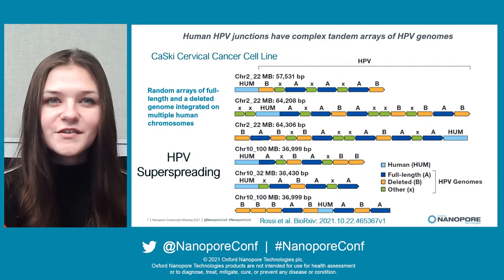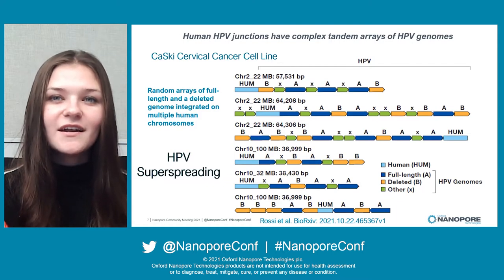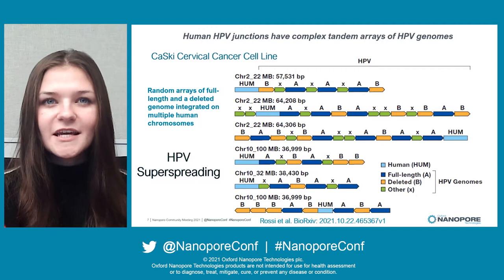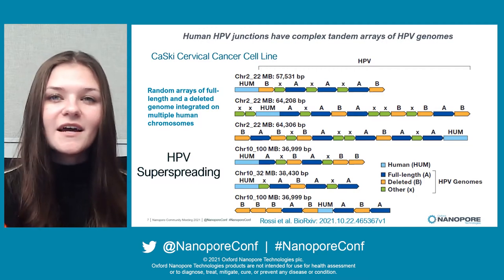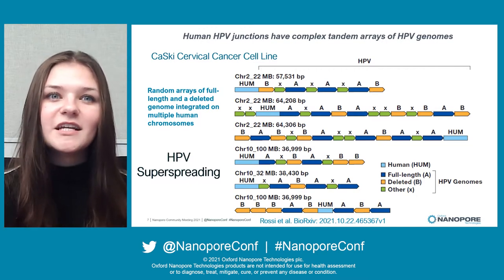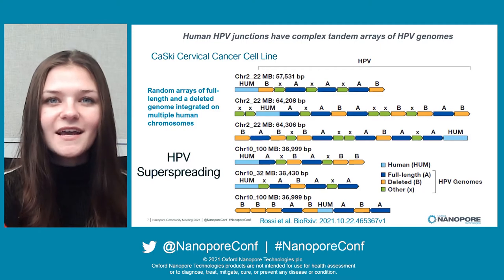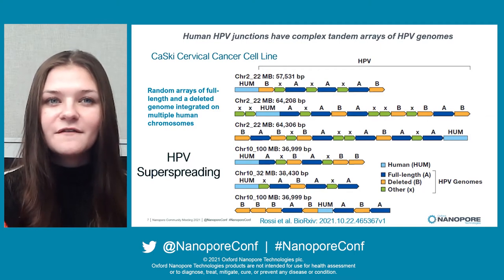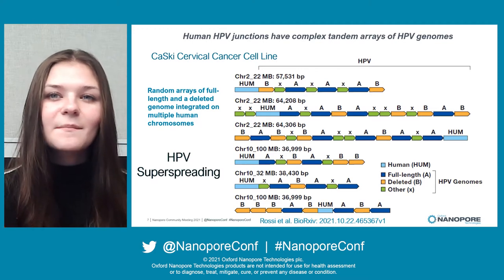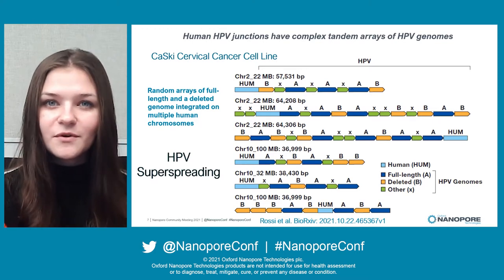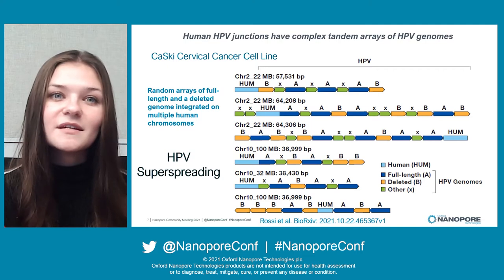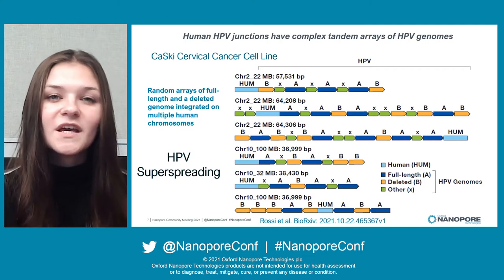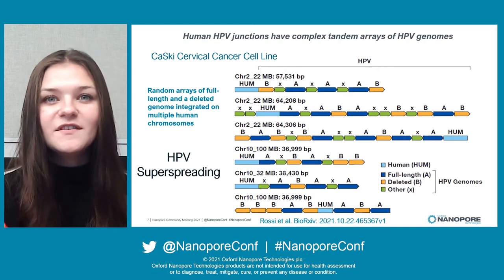The Caskey cervical cancer cell line is known to have 600 to 800 HPV genomes in complex arrays of both the full-length HPV16 genomes and multiple copies of a truncated HPV genome designated as genome A and B respectively. These structures are integrated at 30 to 50 chromosomal locations in the tumor cell line genome. Because the same HPV genomes are integrated in multiple chromosomes, they must have arisen before integration occurred. We term this phenomenon HPV superspreading.